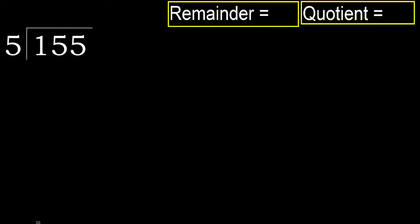155 divided by 5. 1 is less, therefore next. 15 is not less, therefore with 15, multiply by which number is nearest to 15.